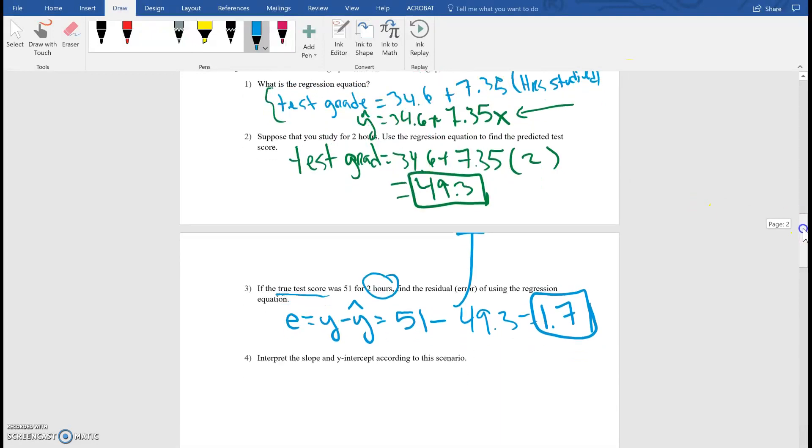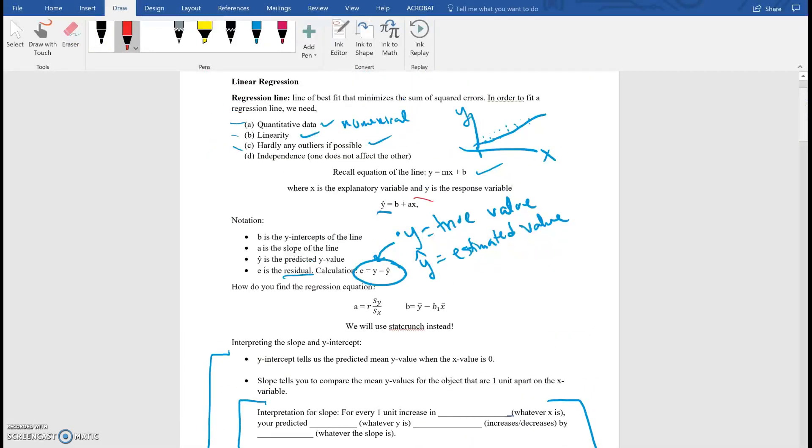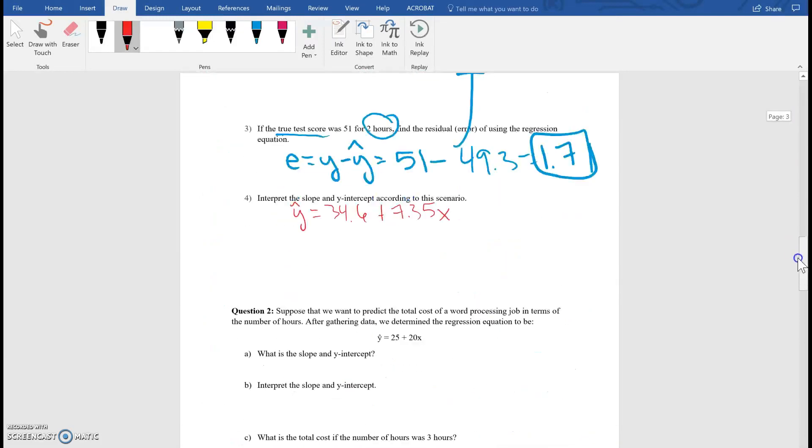And then my last question, interpret the slope and Y intercept according to the scenario. So let's go back to my regression equation. My regression equation was Y hat equals 34.6 plus 7.35X. So let's try to look at what my slope is and what my Y intercept is. If you go back up to this, it tells you here what each variable is. So B is my Y intercept and A is my slope. And down here, I actually have a little interpretation of how to interpret that. So let's go back down.